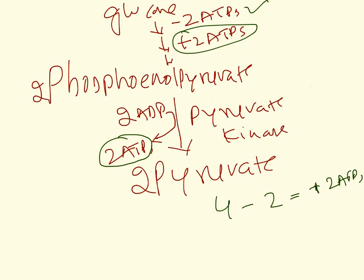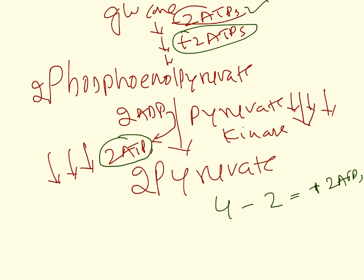The problem is: what happens if there is a deficiency of pyruvate kinase? If pyruvate kinase enzyme concentration is decreased, there will be lack of generation of the 2 ATPs from this step. So if you take 1 glucose molecule going into 2 pyruvate with pyruvate kinase deficient, those 2 ATPs are not synthesized. Overall, you spent 2 ATPs initially and got back 2 ATPs from phosphoglycerate kinase, but in this step you are not getting the 2 ATPs — so net ATP gain is 0.